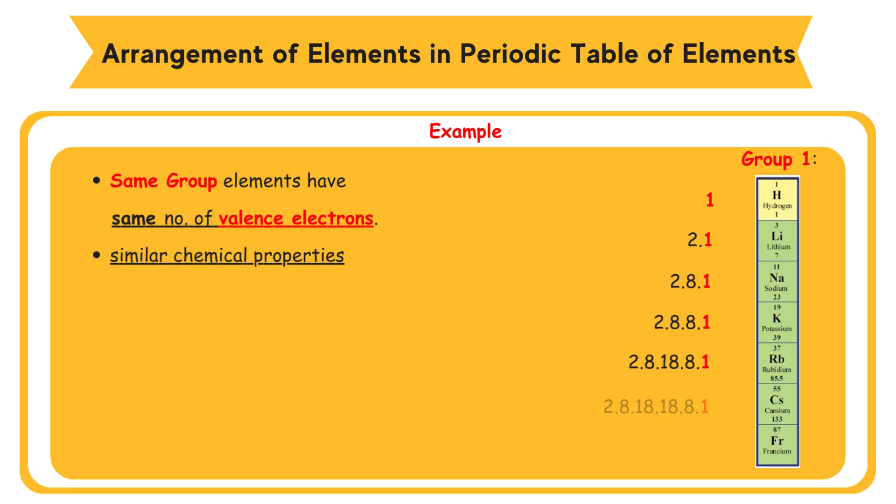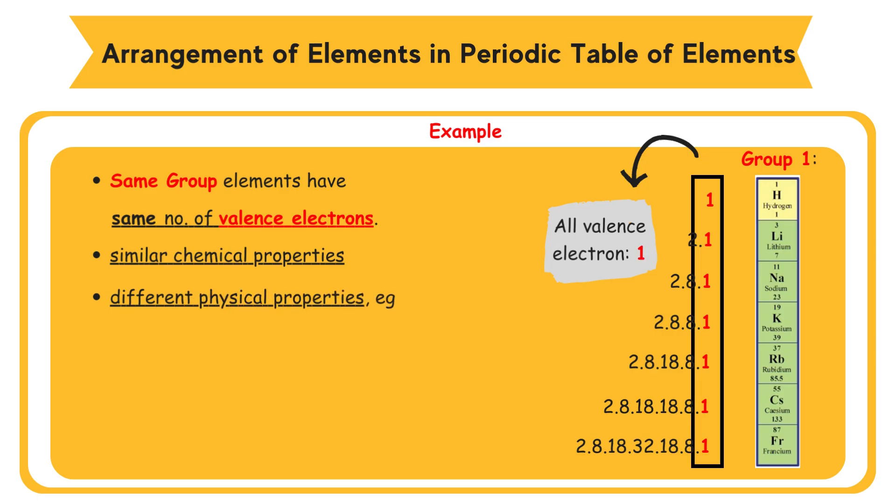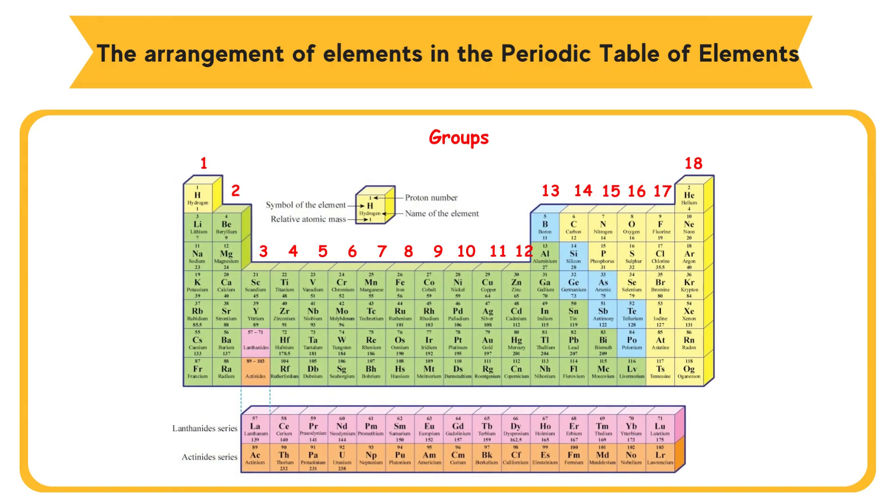The physical properties, such as melting point, boiling point, density, and color changed gradually down the group. Horizontal Row is known as period. All elements in a period have same number of shells filled with electrons.